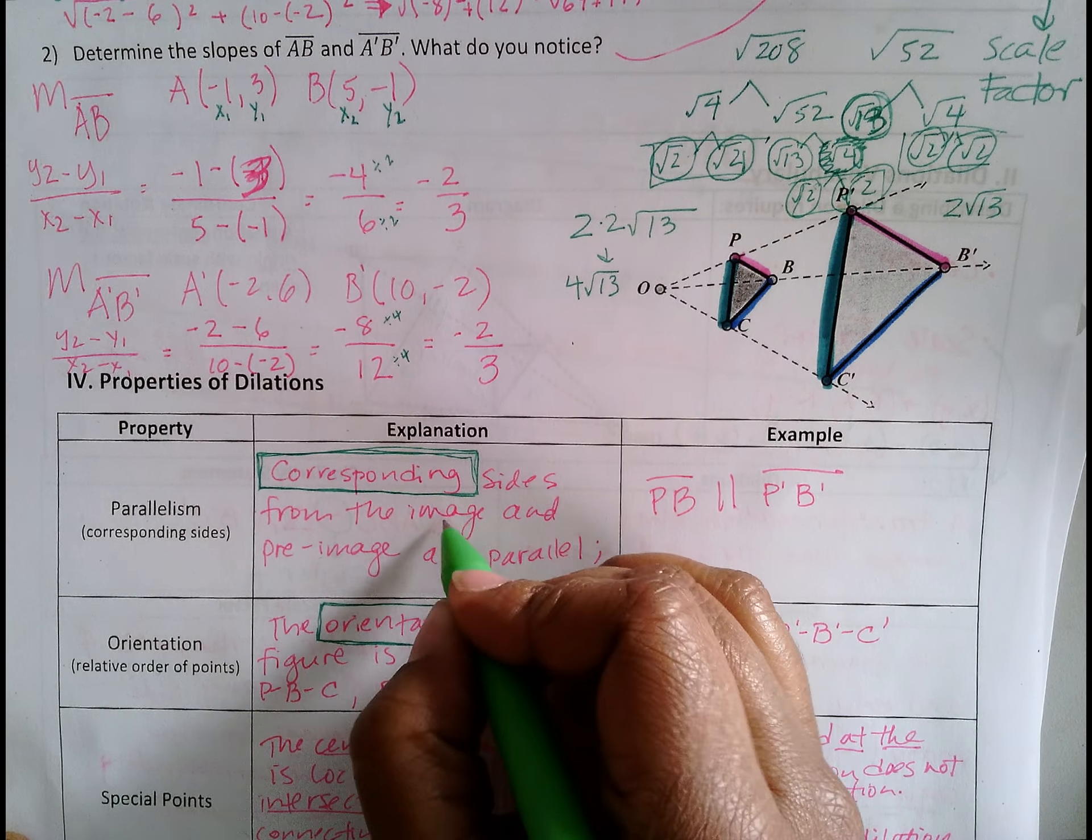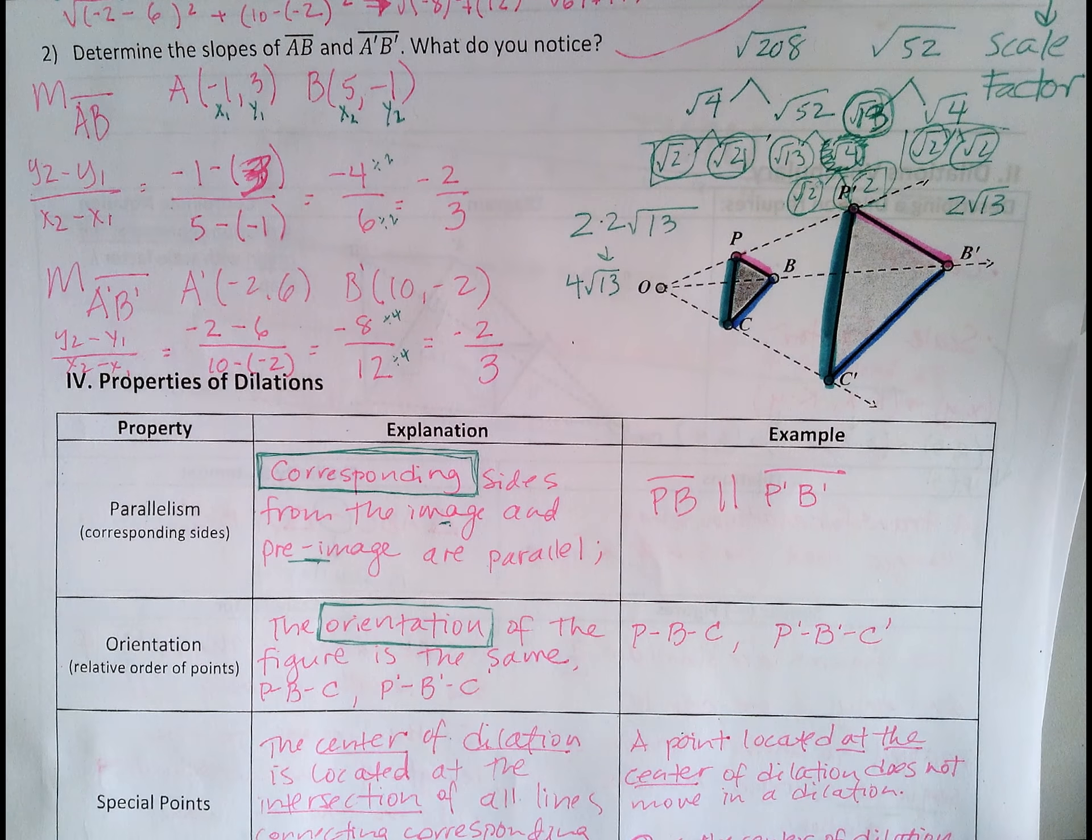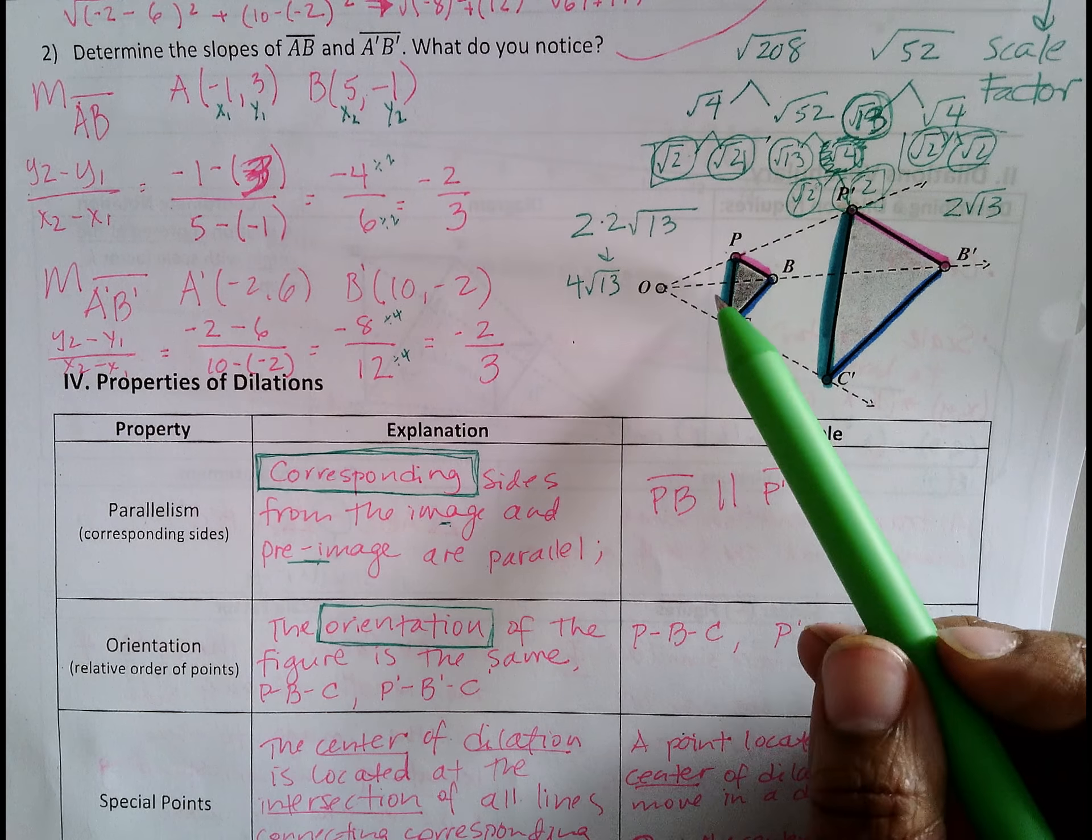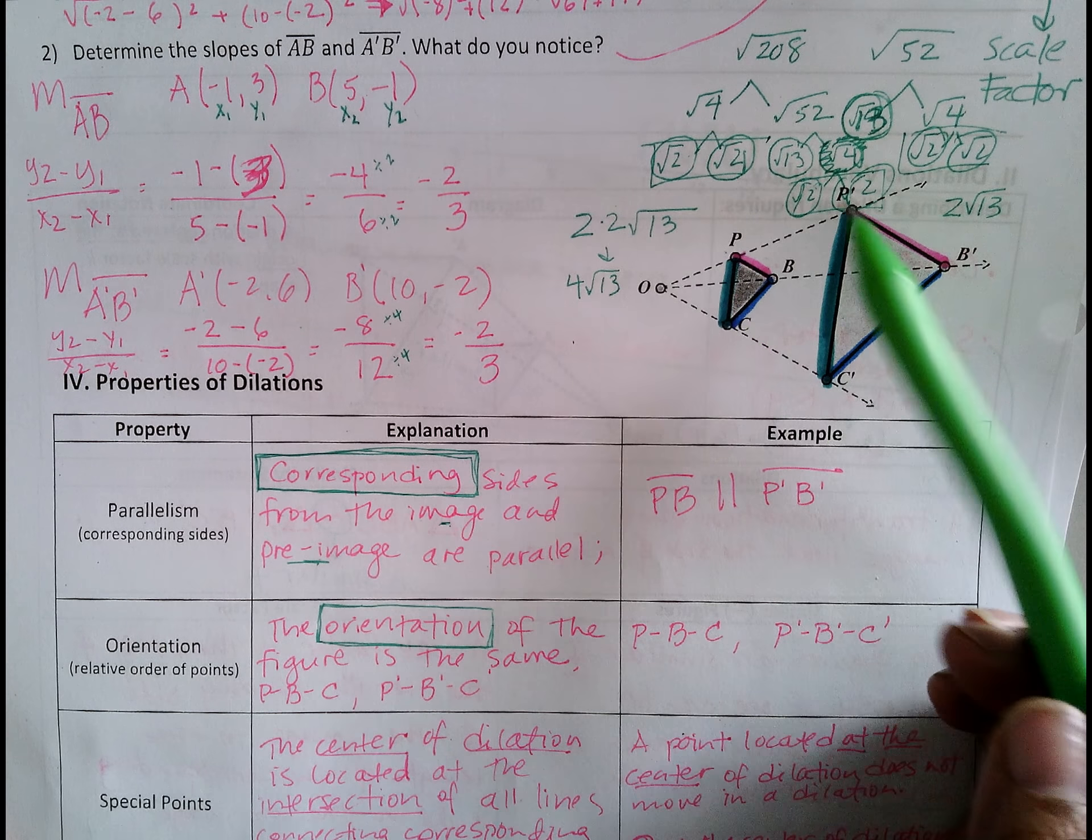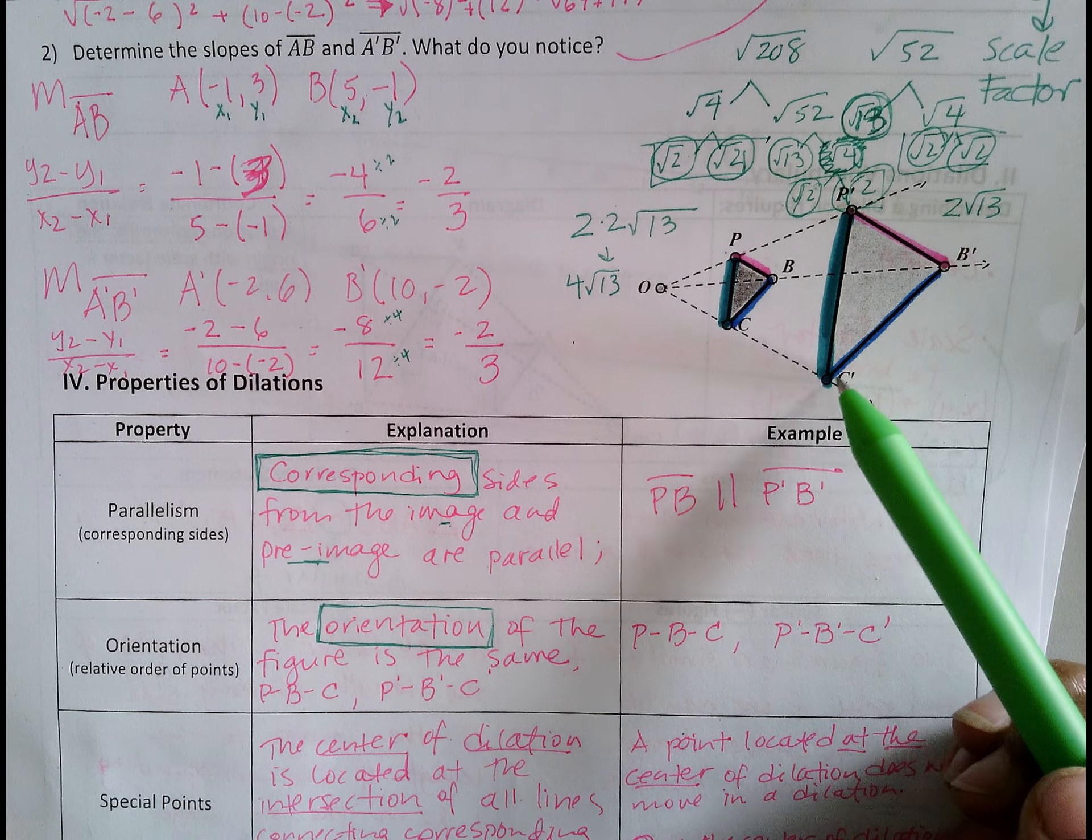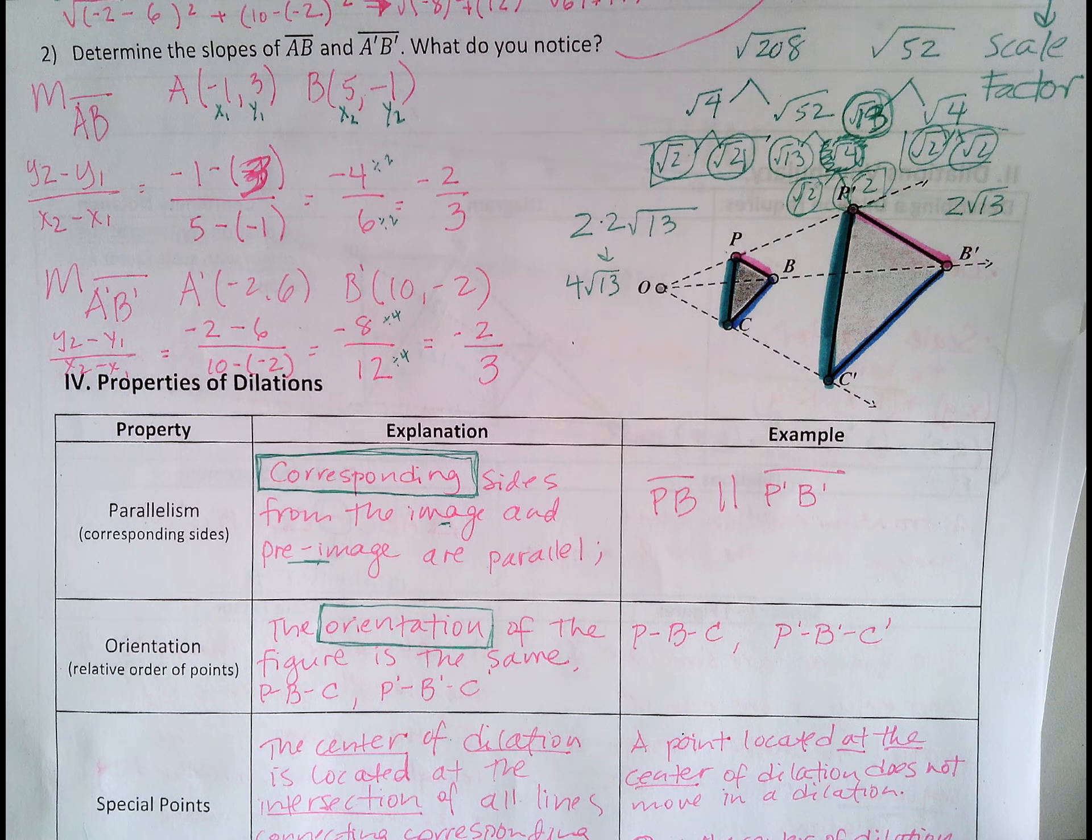Make sure you know what an image is and a pre-image. So yeah, the orientation stays the same. It's PBC when I read it clockwise. It's CBP when I read it counterclockwise. It's P'B'C' when I read this dilated figure or similar figure clockwise. And of course, C'B'P' when I read it counterclockwise. So the orientation doesn't change.